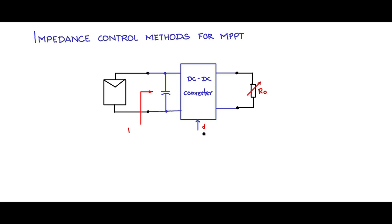And we have established that RT, the terminal resistance as seen from the photovoltaic panel side, is a function of R0 and D.